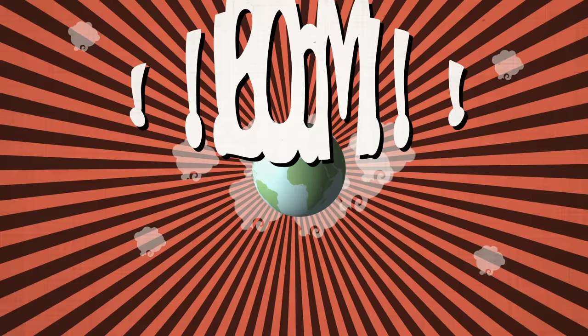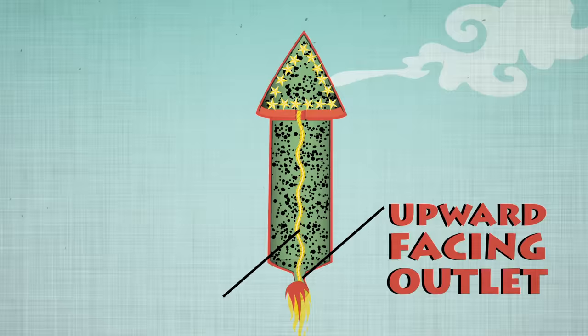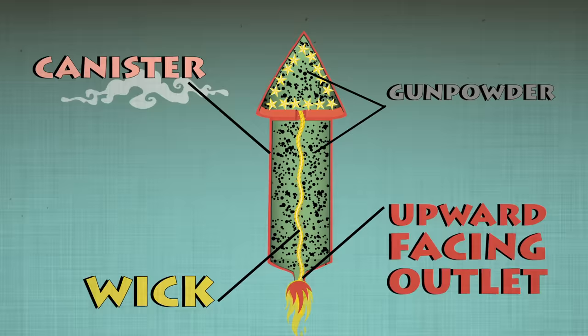Firework canisters provide a single upward-facing outlet to channel this explosive energy. The wick ignites the gunpowder, and the energy takes the easiest exit from the canister, launching the firework high into the sky. The flame then makes its way through the fireworks encasing, and the same reaction occurs high above our heads.